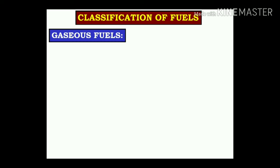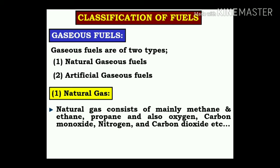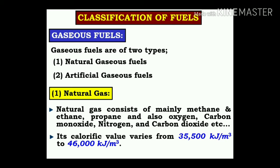Classification of gaseous fuels: gaseous fuels are of two types — natural gaseous and artificial gaseous fuels. Natural gas consists mainly of methane and also propane, oxygen, carbon monoxide, nitrogen, carbon dioxide, etc. Its calorific value varies from 35,500 kJ/m³ to 46,000 kJ/m³.